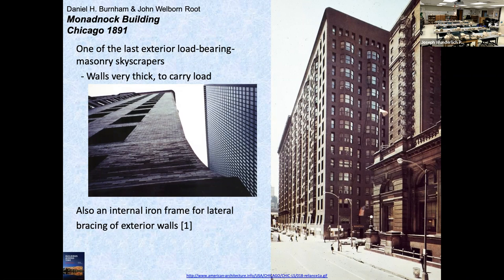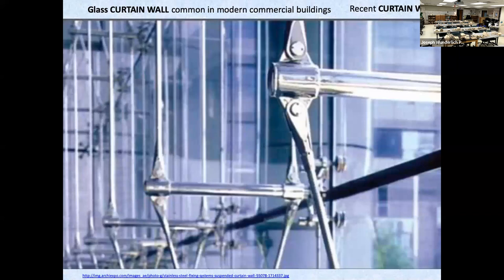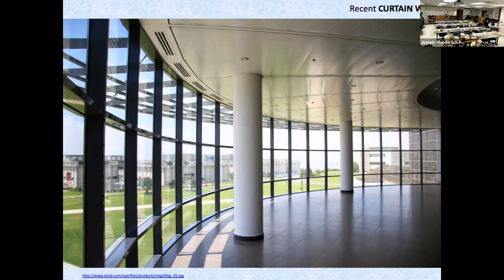This is one of the last buildings with exterior load-bearing masonry — you can see it fans out at the bottom. It did have a steel or iron frame inside for lateral bracing. Here is a precursor to the curtain wall, built out of terracotta. This is a steel frame building — the curtain wall. If you have a very strong structure, like a spine, then you can make the skin non-structural, not load-bearing. It can be all glass — a curtain wall.